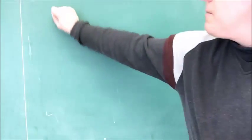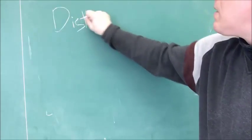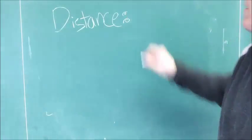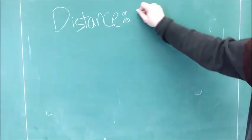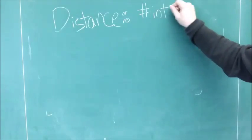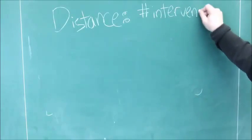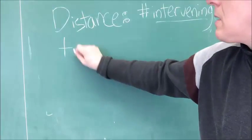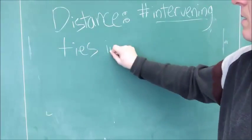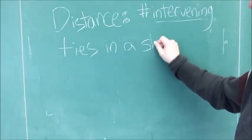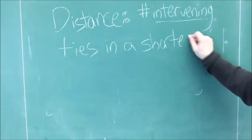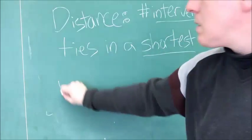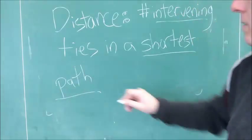Another property of a social network and social network structure is distance. Distance is defined as the number of intervening ties, the number of ties that lie between two nodes in a network. And those networks lie along a path, and not just any path, but the shortest possible path between those two nodes.